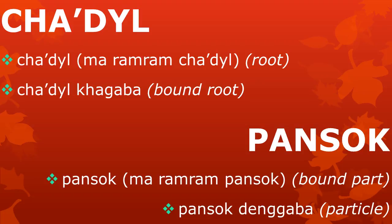So, we have four categories: the 'tzadl' or regular roots, which we can use as words by themselves; the 'tzadl kagba', which always need something tied to them; the 'pansok' or regular bound parts, which cannot be used as words on their own and always need to be tied to some tzadl; and the 'pansok dengaba', or particles, which we can untie and use as words on their own.